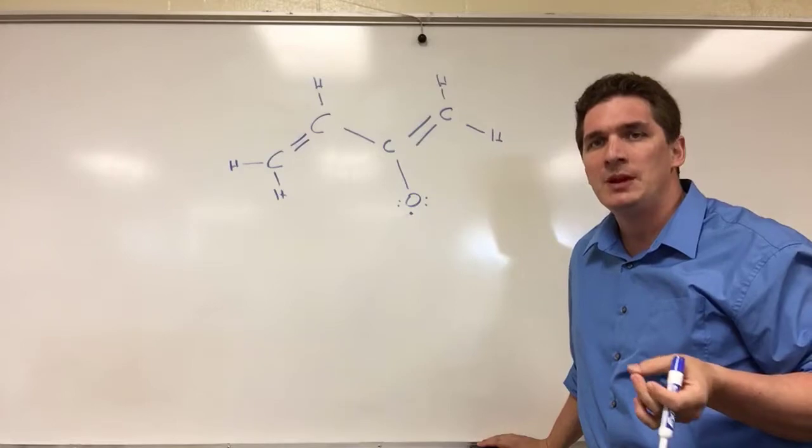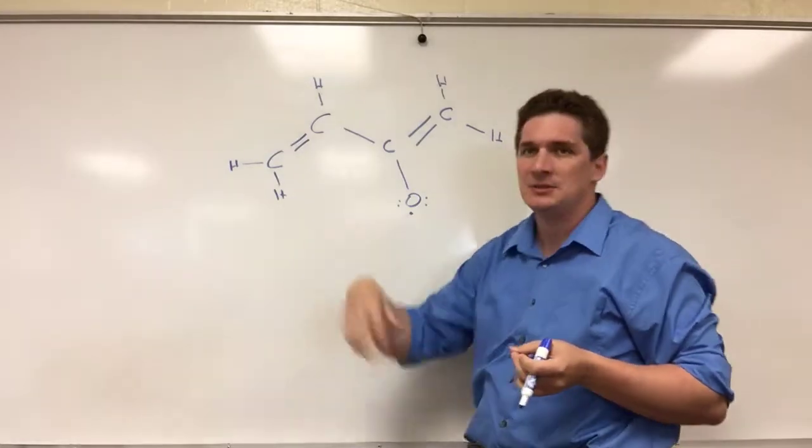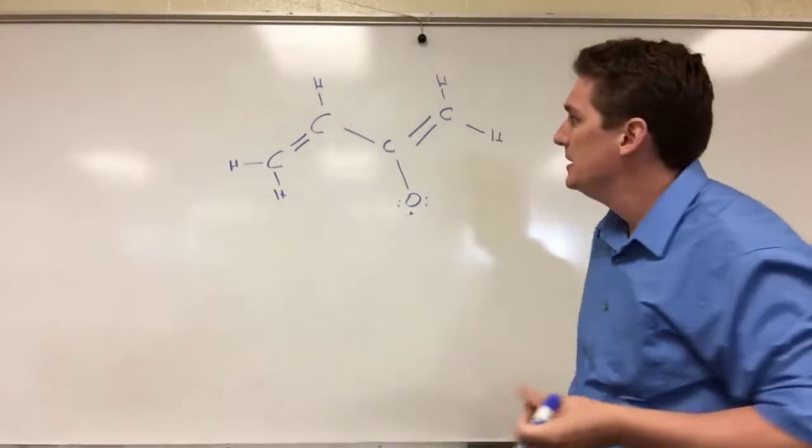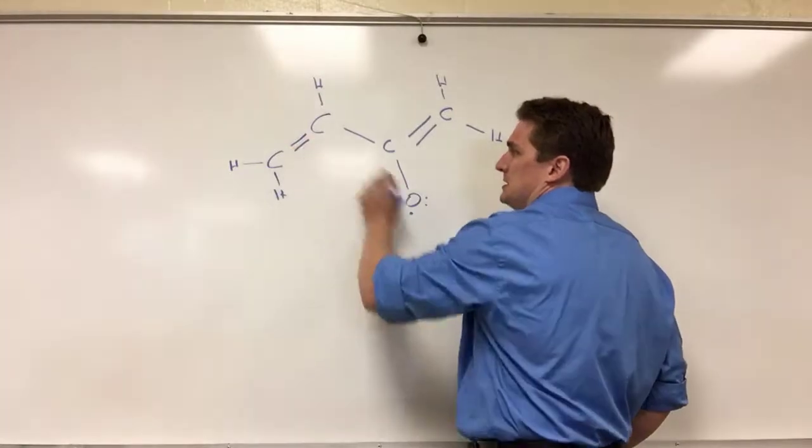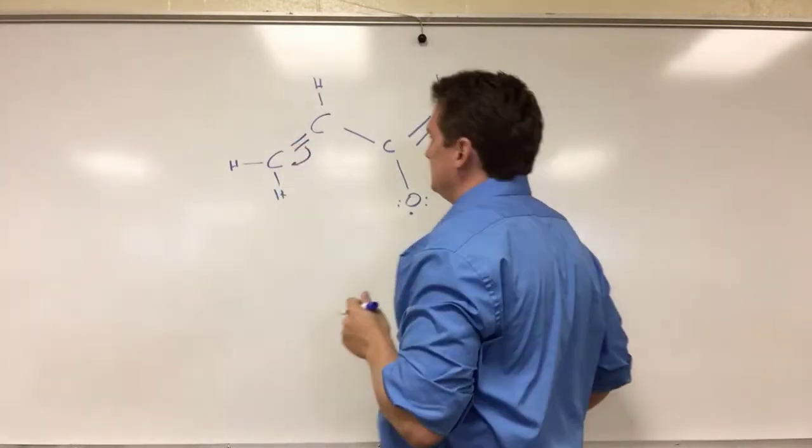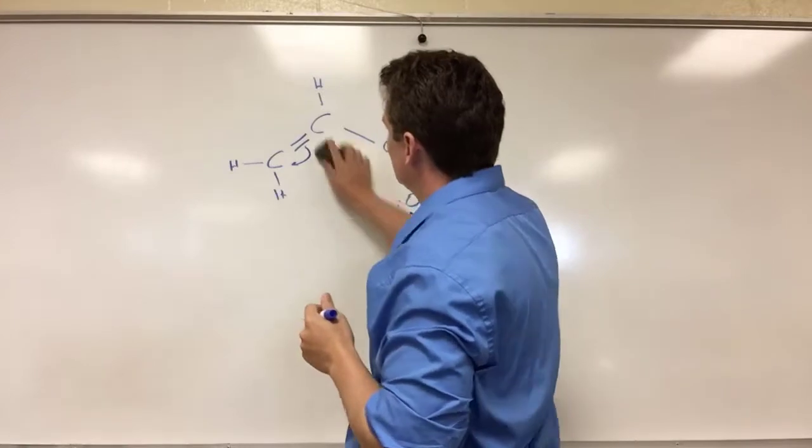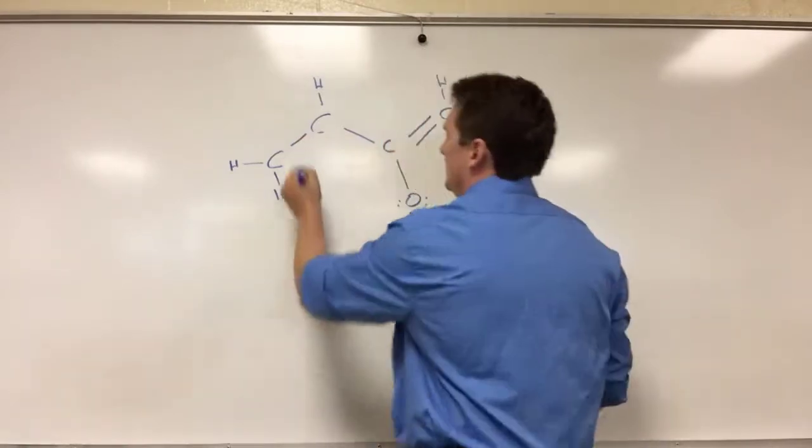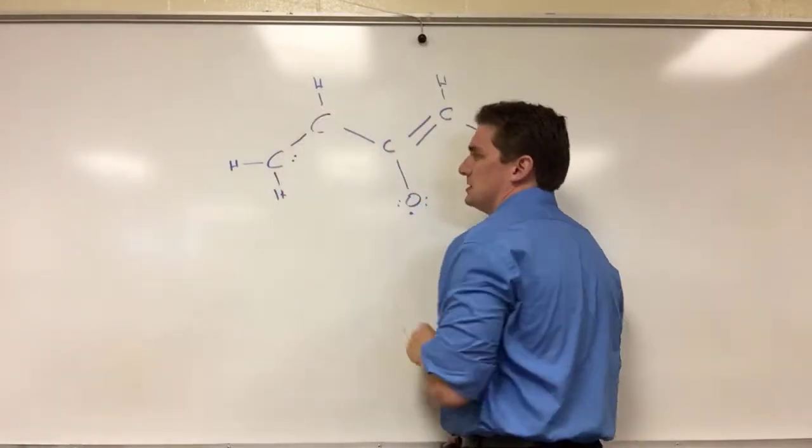What can we do? Well, we have the option of moving the radical or we have the option of moving the double bonds. So one option is to take this double bond and move it over, and this would give us a structure that looks like this.